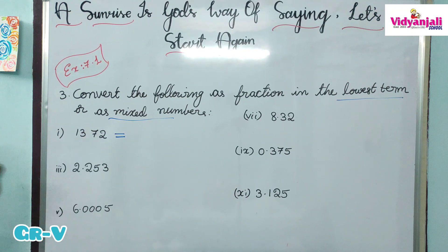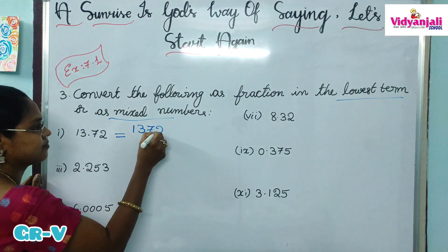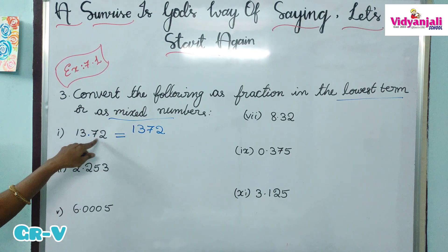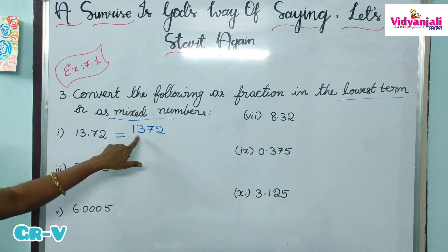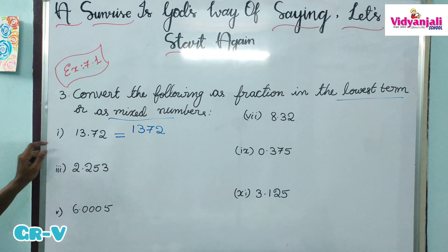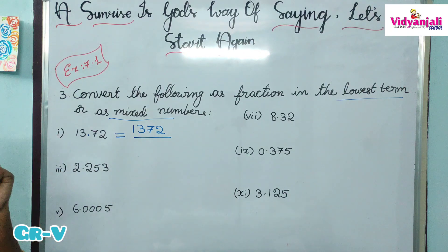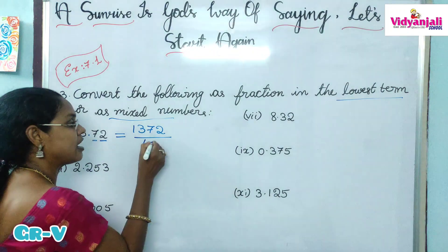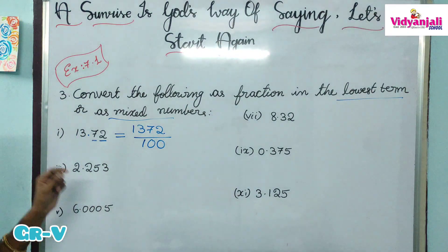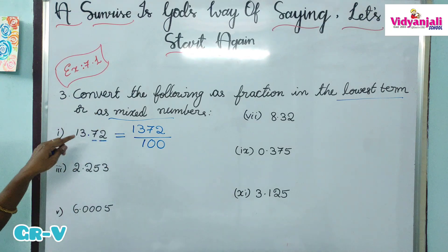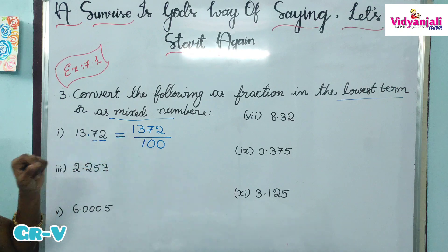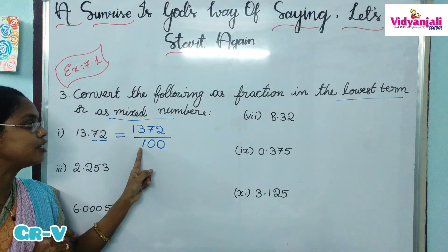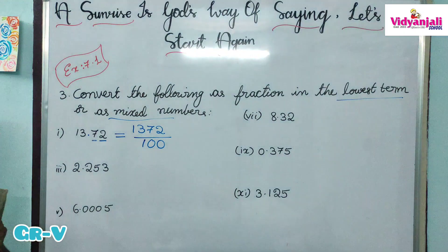How to write 13.72 as a fraction? Without the point, write the number as the numerator — so 1372. Then check how many digits are in the decimal part: one, two digits. So in the denominator, write 1 followed by two zeros: 100. After writing it, we have to cancel if there is any common factor. This is method one.